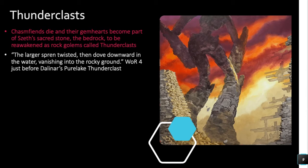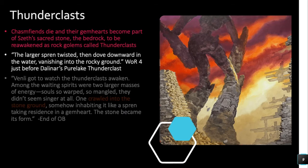In a Dalinar vision set at the Pure Lake, he says: 'The larger spren twisted, then dove downward into the water, vanishing into the rocky ground' — so it's in the bedrock. Right after this, Dalinar sees an enormous Thunderclast rising from the bedrock of the lake, coming through the lake and terrorizing everyone. The implication is that the spren entering the rock somehow caused the Thunderclast to be made.